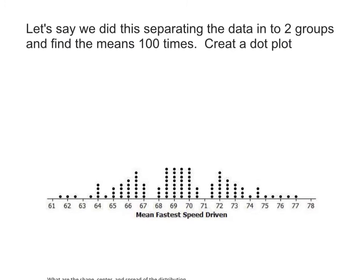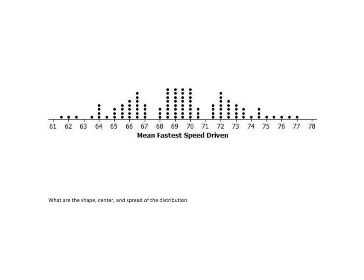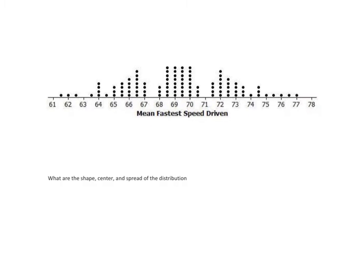So let's say we did this separating the data into two groups, and we found the means 100 times. Okay, so we use some sort of simulator at this point, because we're not going to do this ourselves, so we use that simulation, and we've created this dot plot. So here it is for you. So I found the means 100 times and created this dot plot. Basically, you should be able to describe the shape, the center, and the spread of this distribution.